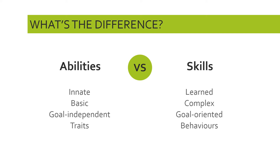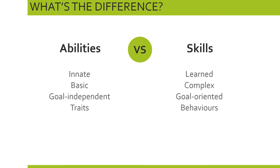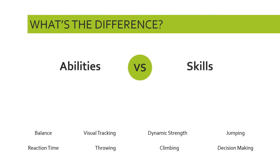Now I'm going to slightly complicate things as we talk about some examples of abilities and skills. I've put eight potential abilities or skills on the screen, and we're going to decide whether each is a skill or an ability based on our definitions. First off: balance.